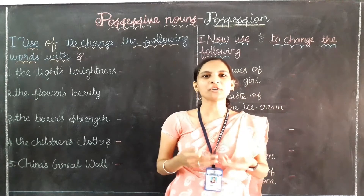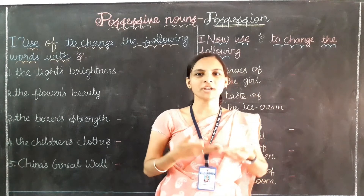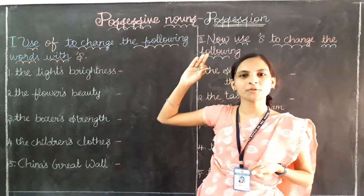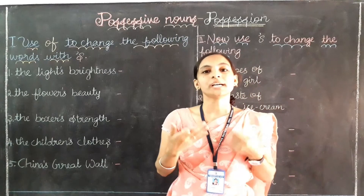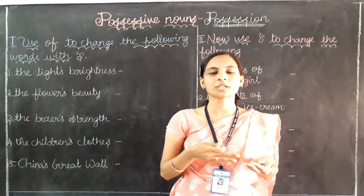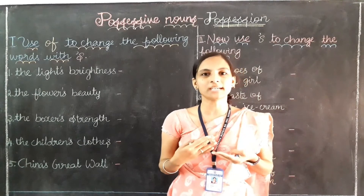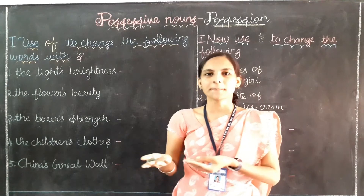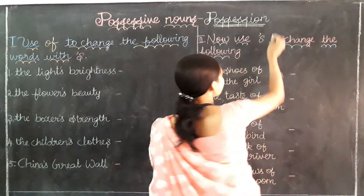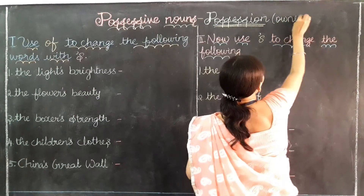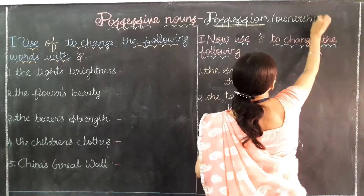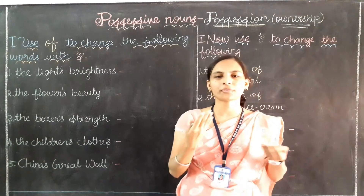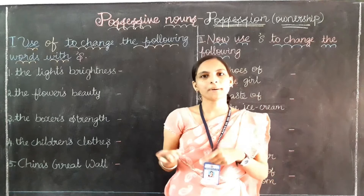Hello children. In the previous video we learnt about possessive nouns. Possessive nouns are used to tell us about the ownership — who owns that thing or that person. In simple words, it is used to show the ownership of objects or persons.